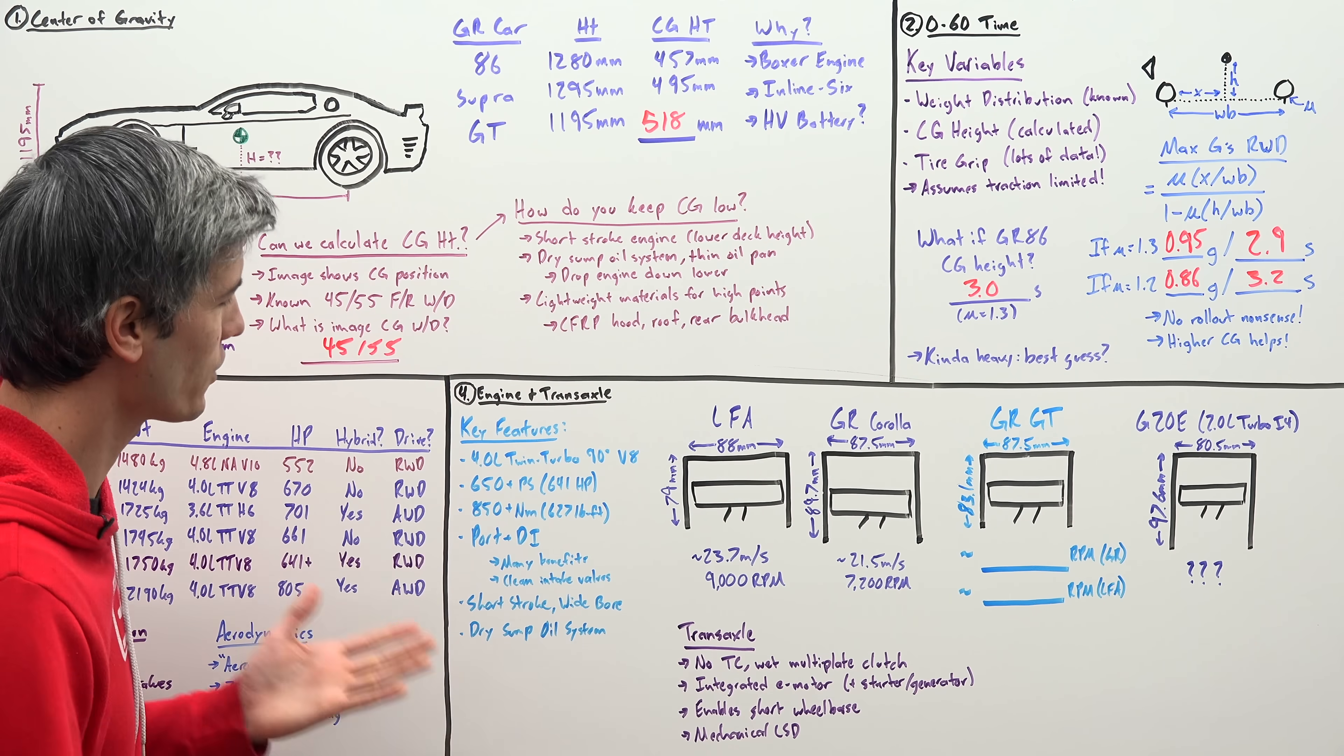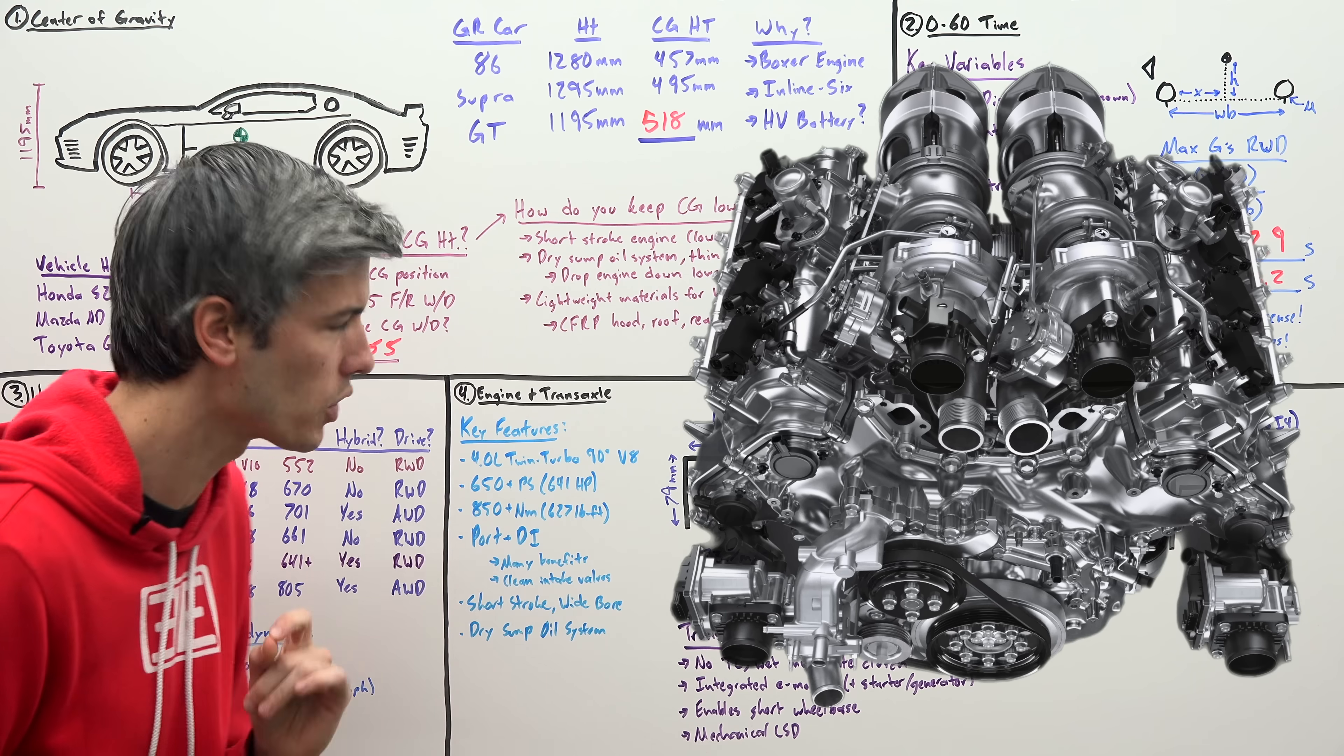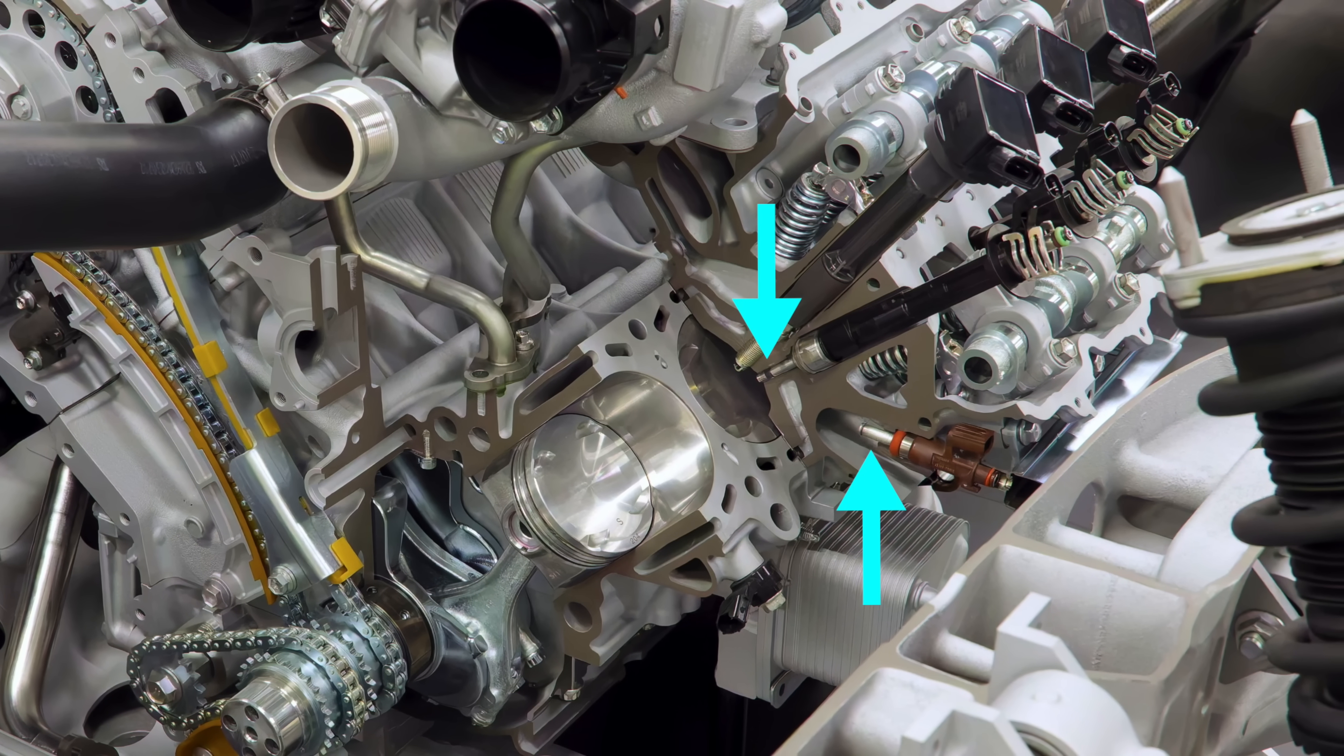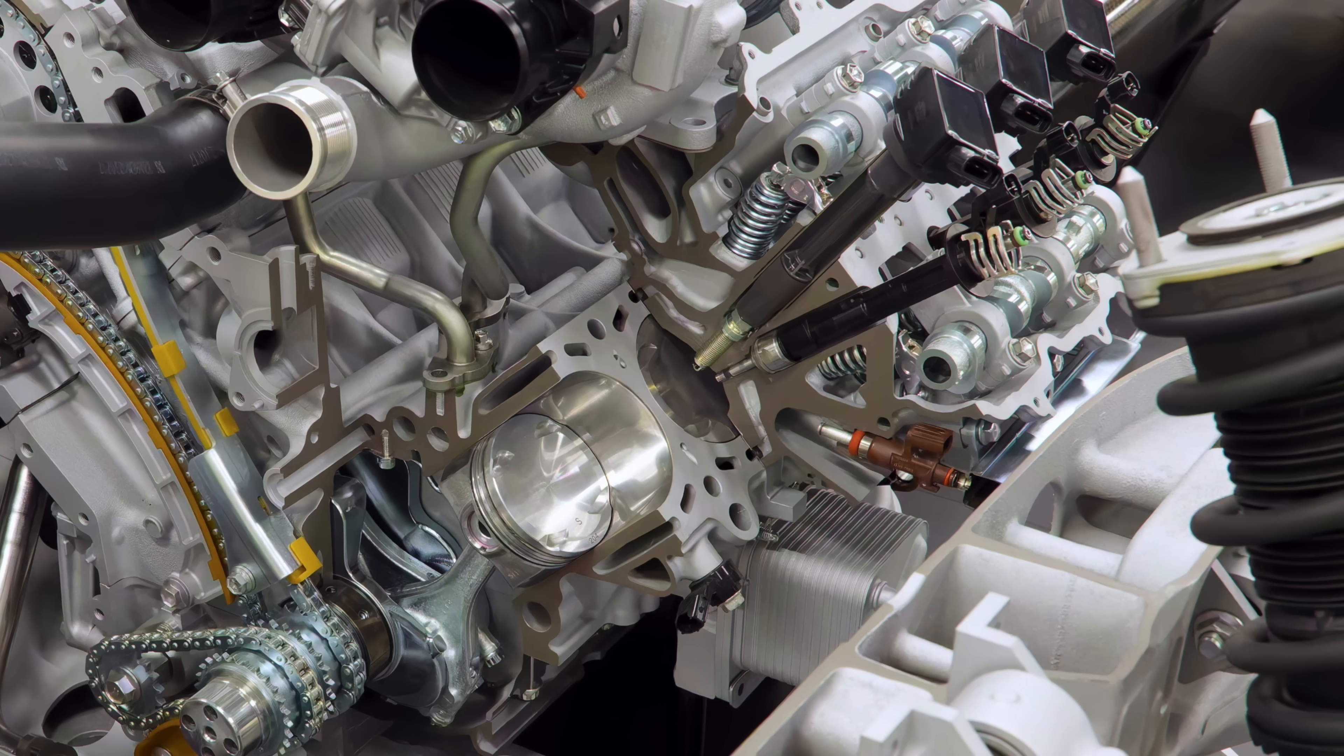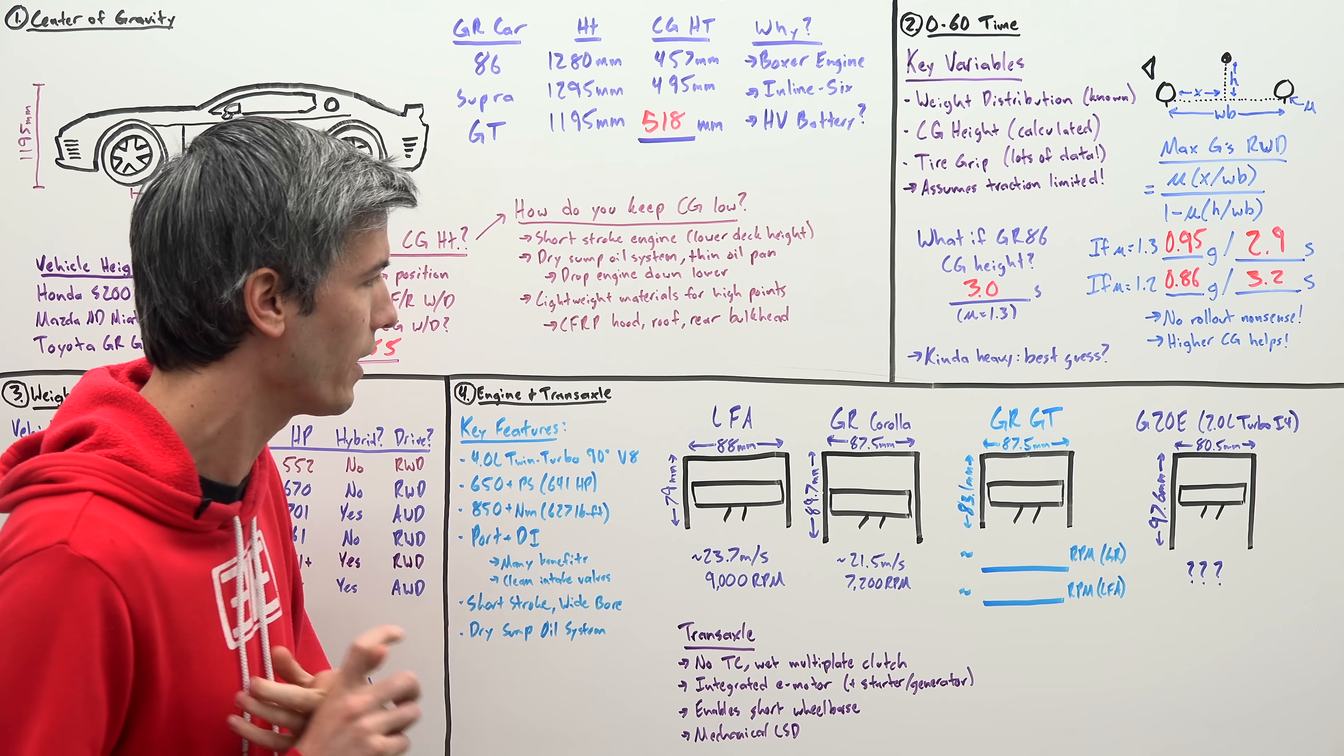Now, speaking of turbos, let's chat about this engine. So we've got a 4 liter twin turbo 90 degree V8. Toyota says it's going to make 641 horsepower or greater, with 627 pound-feet of torque or greater. It's going to have port and direct injection. This is great. I love this. There's a lot of benefits to doing this. I have a whole video explaining what they all are. But another cool benefit is that it keeps your intake valves clean. You don't have to worry so much about carbon deposits building up on them.